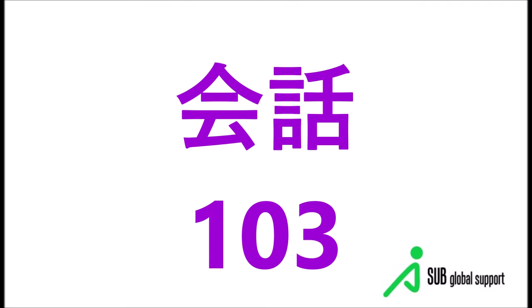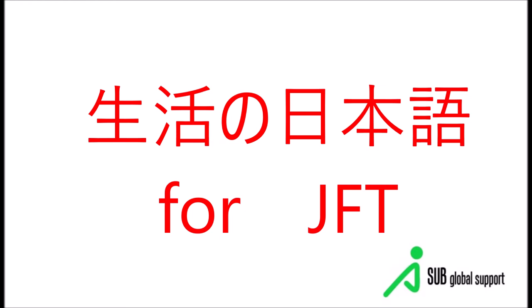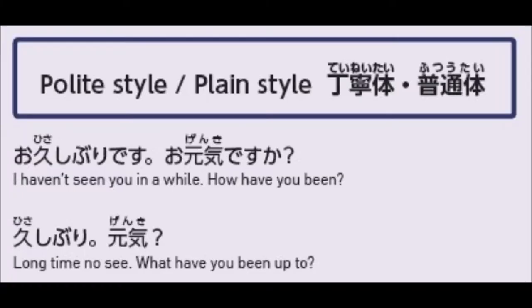Let's study Kiyo Kaiwa 103 — Nihongo for Seikatsu, or Japanese for Everyday Use. Let's start with the difference — alamin natin ang kaibahan — the difference of polite style and plain style. Polite style is Teinei-go, or Teinei-tai, also called Keigo.